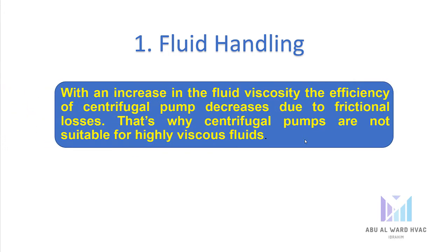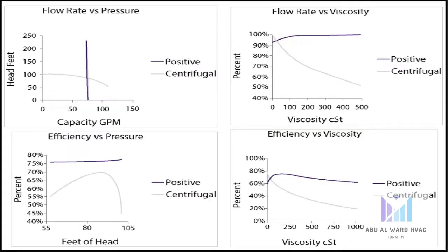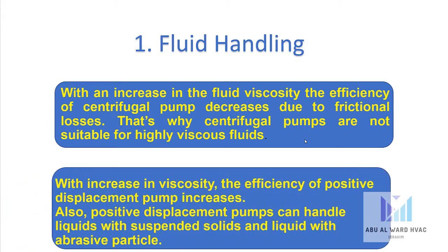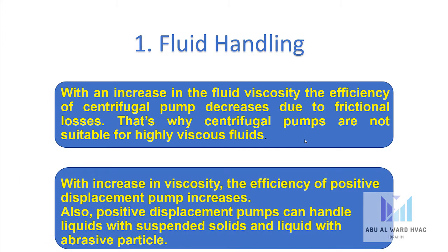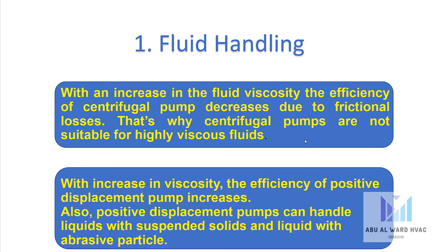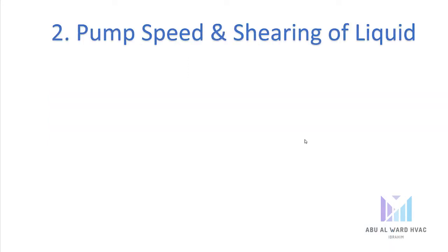With an increase in fluid viscosity, the efficiency of a centrifugal pump decreases due to frictional losses — that's why centrifugal pumps are not suitable for highly viscous fluids. With an increase in viscosity, the efficiency of a positive displacement pump increases. Also, positive displacement pumps can handle liquids with suspended solids and abrasive particles.